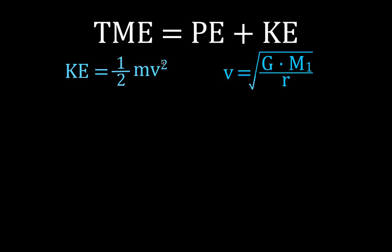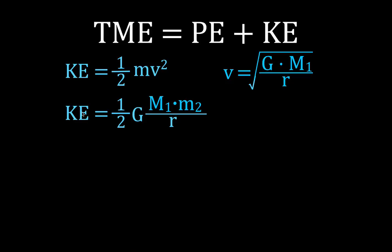Since we have v squared, squaring that orbital velocity term gives us G times M1 divided by r. Substituting that in, we get one-half times G M1 over r, times M2 — the mass of Sputnik. You'll notice that the kinetic energy is really equal to one-half of the potential energy expression. So the kinetic energy of the orbiting object is half of the potential energy — just like that.